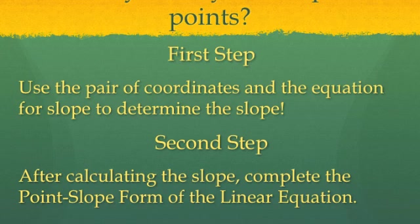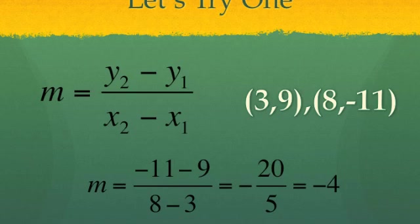Now what can we do if we have two points on the line but we don't have the slope? Well, the first thing we need to do is use the equation for slope, plug in our two coordinates, and determine the slope, and then we can use that slope and one of the points to determine the point-slope form.